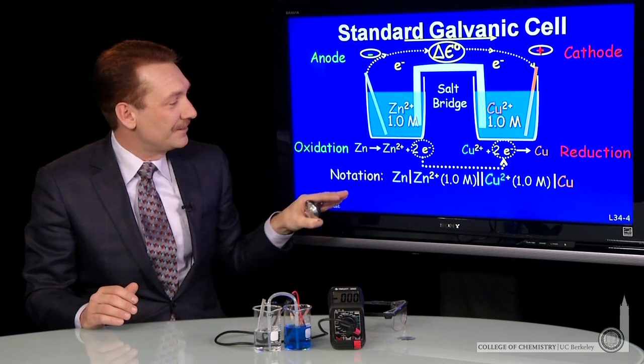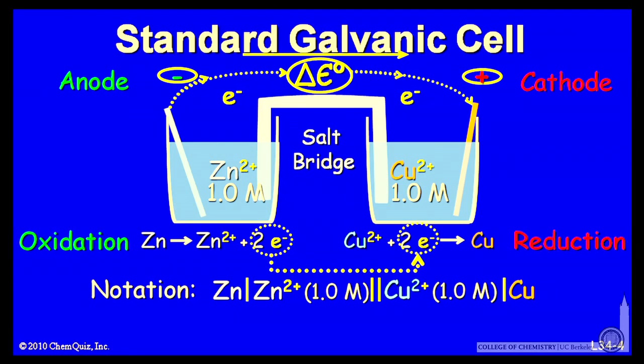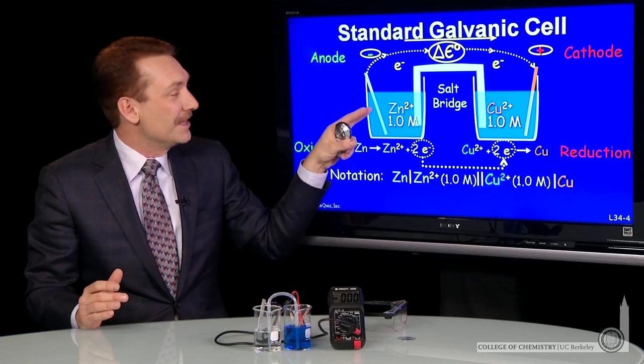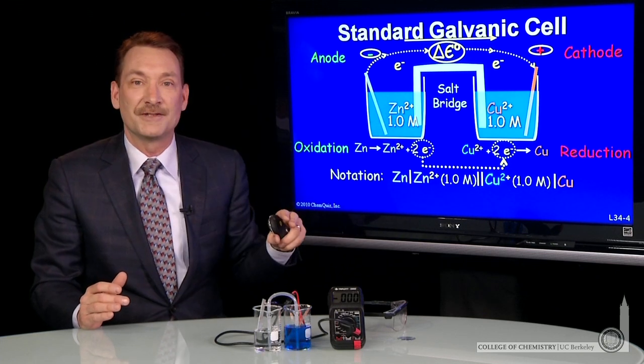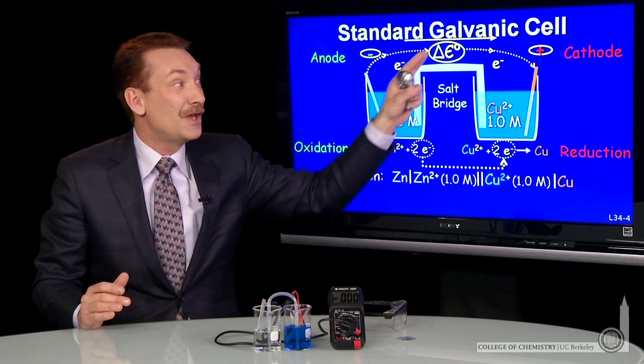So I can write down this cell potential here. There's special notation. I write zinc metal and a bar, and the bar indicates a physical phase difference. This is zinc metal in contact with zinc ions, and that describes this half cell here, the zinc metal in contact with zinc ions.